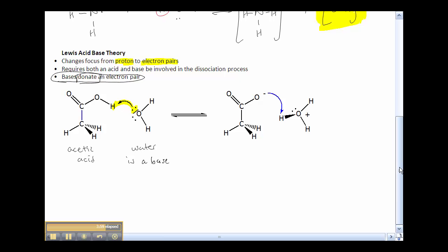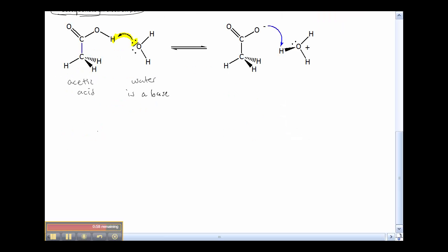We can look at the same thing with ammonia again. Here's the water, and according to the Lewis theory, these electrons right here will attack this proton, and that's how we will get the NH4 plus and the OH minus.